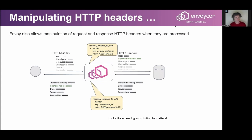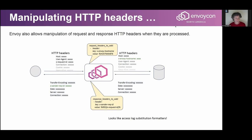Now let's move to manipulating HTTP headers. There's a mechanism that has been in Envoy for a while. Basically what it allows you to do is modify the headers as they pass through Envoy in the upstream and downstream directions — you can manipulate request headers and response headers. The way to do it is via configuration. You specify two things: the name to give the header to be added, and the value, which is also identified using a substitution formatter — a string starting and ending with a percentage sign.